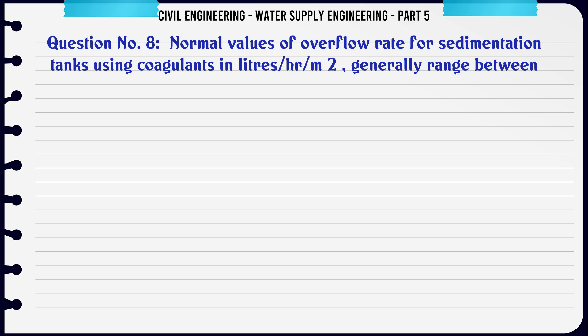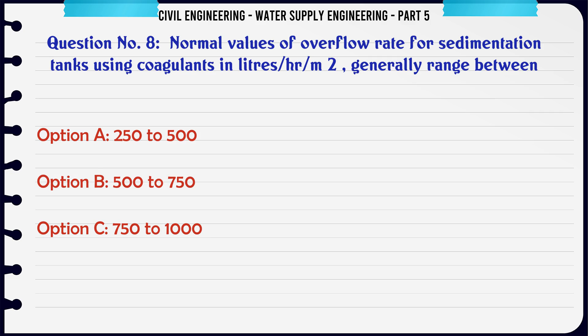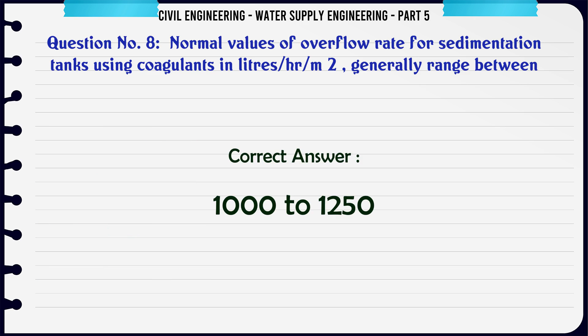Normal values of overflow rate for sedimentation tanks using coagulants, in liters per hour per m², generally range between: A. 250–500, B. 500–750, C. 750–1000, D. 1000–1250. The correct answer is 750–1000.